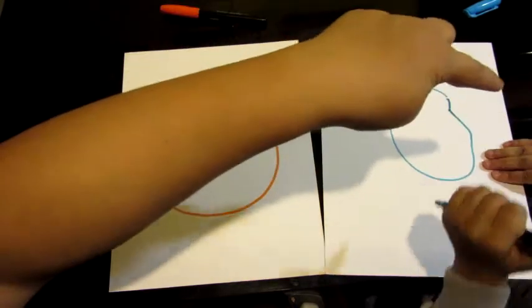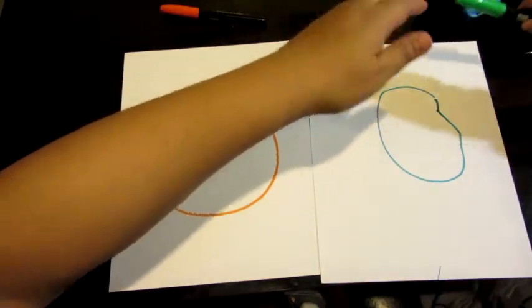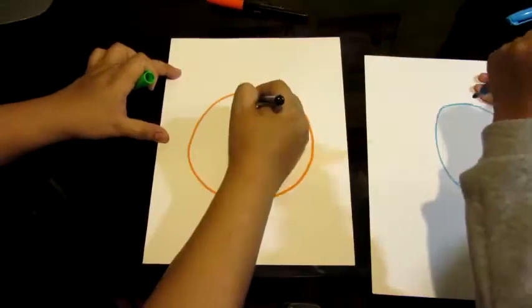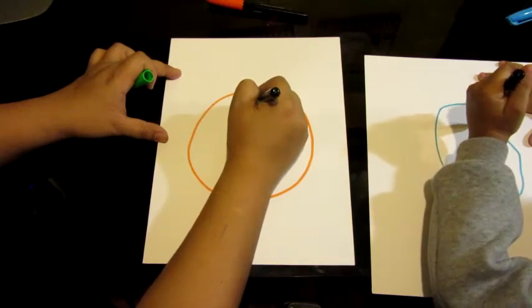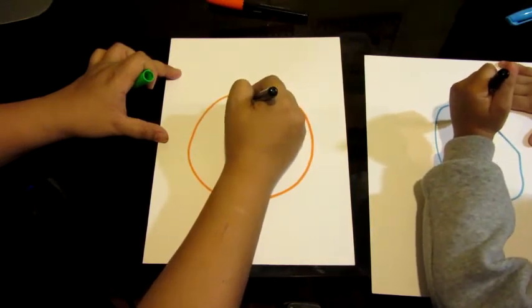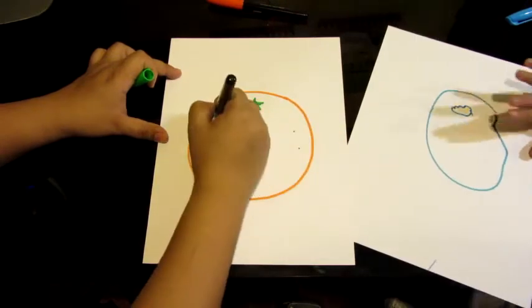And then can you hand me the green? Okay, just draw this part right here. There you go. Add a little dots to your orange.